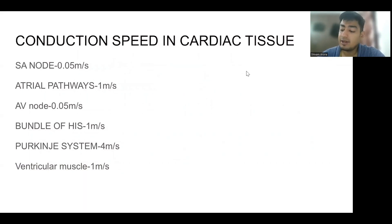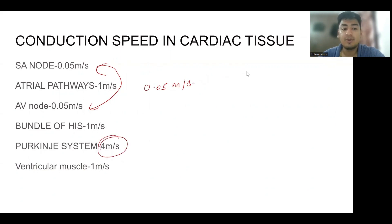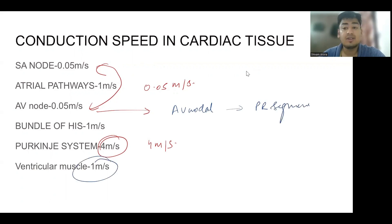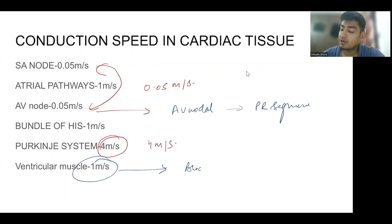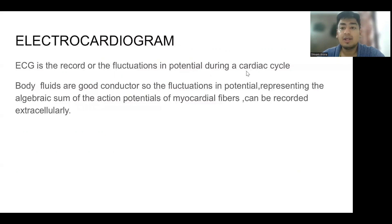The conduction speed in different cardiac tissues is different. The SA node and AV node are the slowest, with a speed of 0.05 meters per second, while the Purkinje system is the fastest at 4 meters per second. Since the AV node is slowest, that's why we have AV nodal delay in the form of the PR segment. The ventricular muscle is also slow, so whenever there is a bundle branch block and ventricular muscle has to conduct impulses, there is formation of broad QRS.